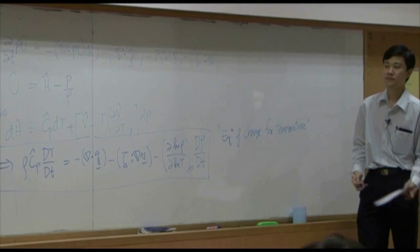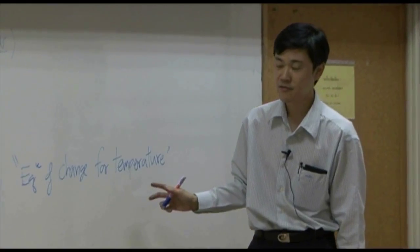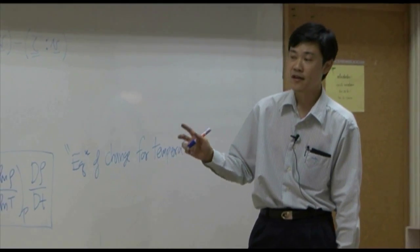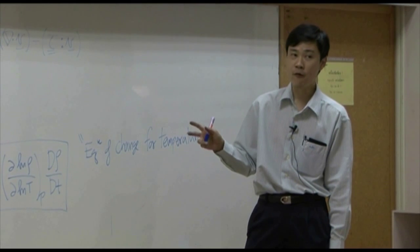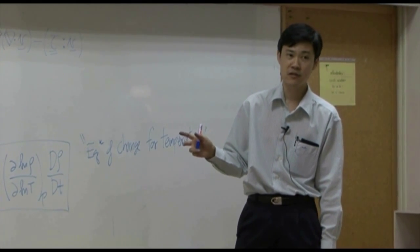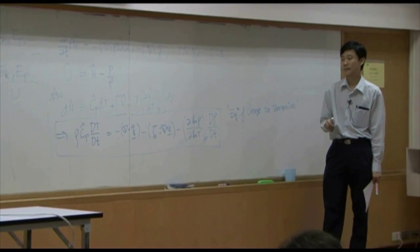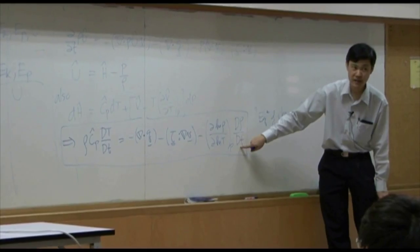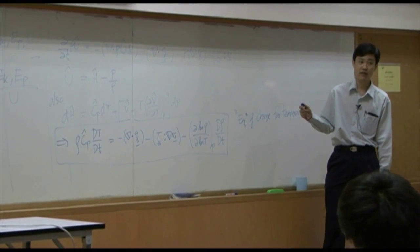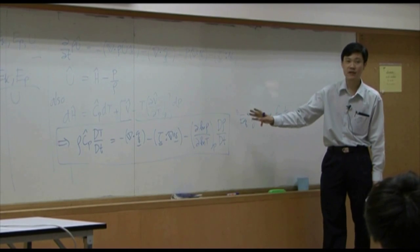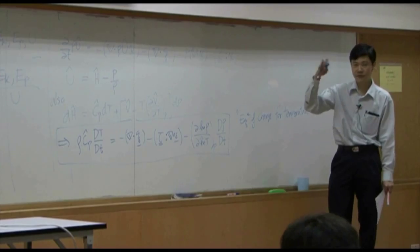The resulting equation is called the equation of change for temperature. It is written as a function of temperature, so it can be used — and is usually used — for systems where you have temperature change. The capital D over capital DT here is the substantial derivative, which we have already discussed. This will be the equation we are going to use to derive the temperature profile.